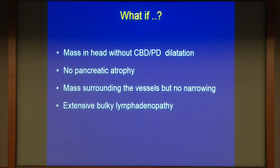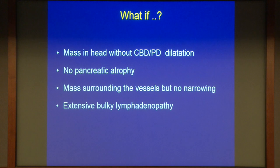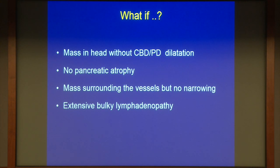When I do an EUS, there are some signs that make me doubt whether it's really a standard pancreatic cancer or something else. What if there is a mass in the head of the pancreas but no ductal dilation? Or no distal atrophy — a bulky mass in the head but no atrophy? Or a mass surrounding the vasculature but not causing any narrowing, which is very unusual for pancreatic cancer? And bulky, huge lymphadenopathy is also unusual for pancreatic adenocarcinoma.